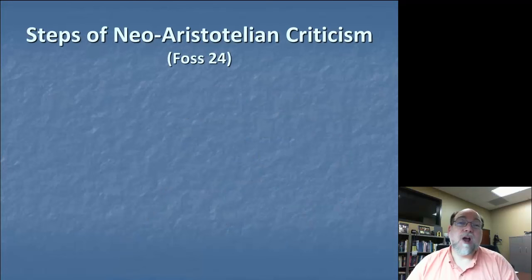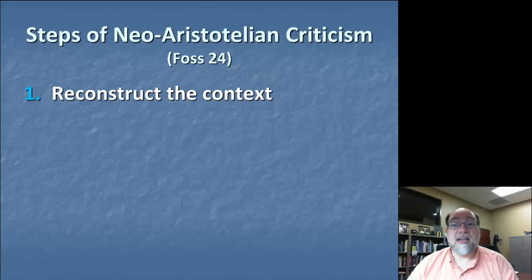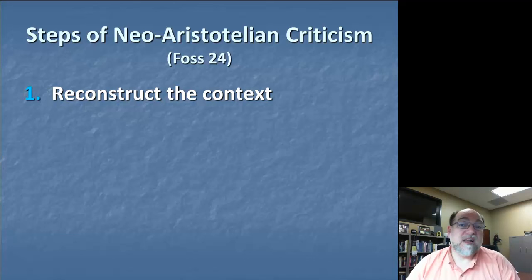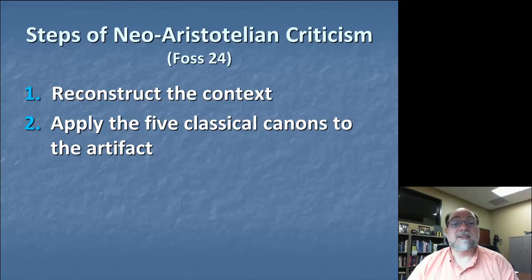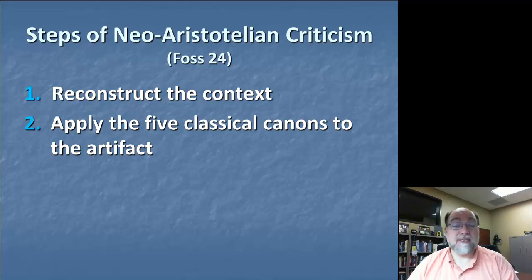But how do we go about the process of neo-Aristotelian criticism more generally? Sonia Foss breaks this process down into some very easy steps. First, we need to reconstruct the context — essentially the particular case Aristotle is talking about: the overall environment, situation, or larger context in which a persuasive act takes place. The second step is to apply the five classical canons to the artifact — the five primary elements of how rhetorical messages get produced and presented, as articulated in classical Greece and Rome.